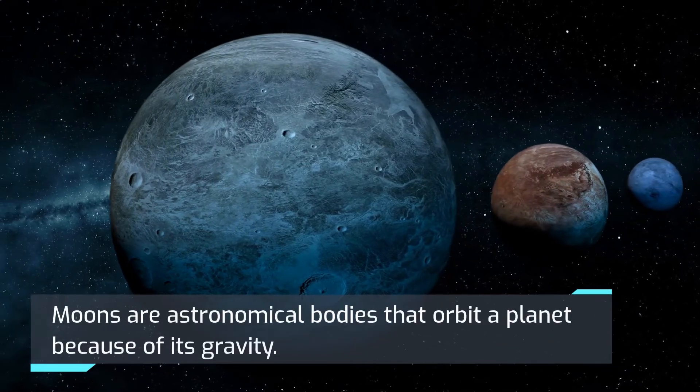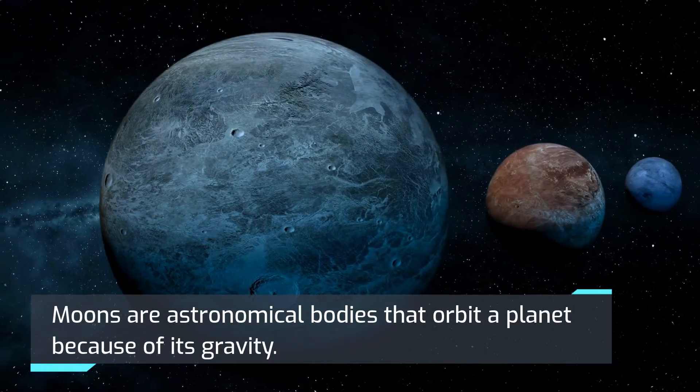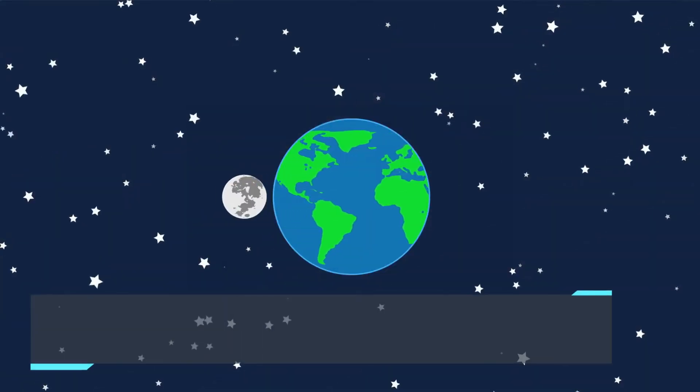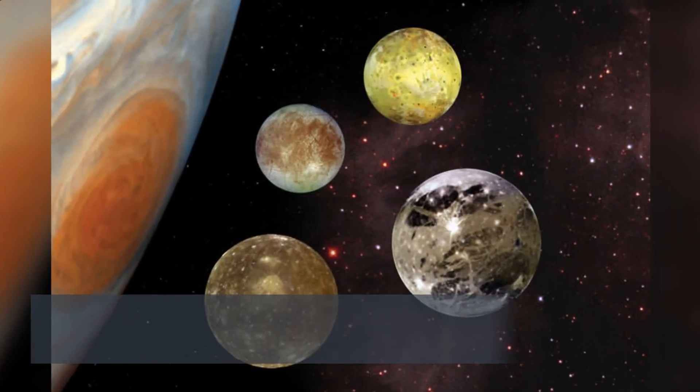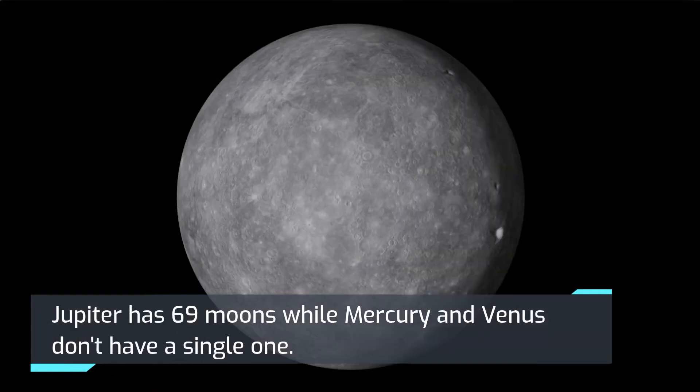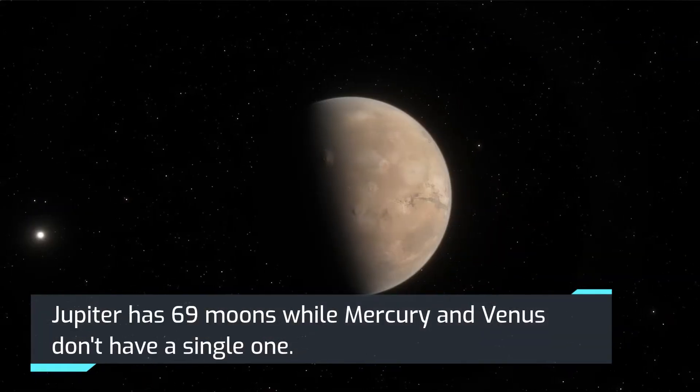Some planets also have moons. Moons are astronomical bodies that orbit a planet because of its gravity. Earth has a moon that is caught by its gravitational pull. Jupiter has 69 moons while Mercury and Venus don't have a single one.